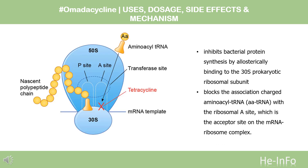Mechanism of Action: Omadacycline binds to the primary tetracycline binding site on the bacterial 30S ribosomal subunit with high specificity. There it acts to block protein synthesis, disrupting many facets of cellular function and resulting in either cell death or stasis.